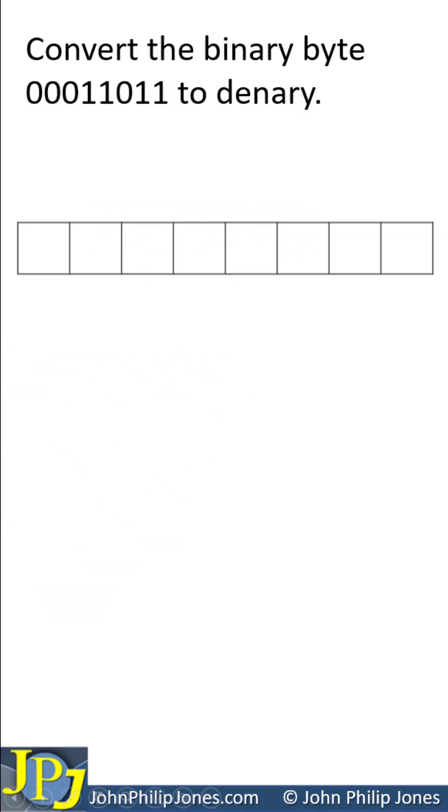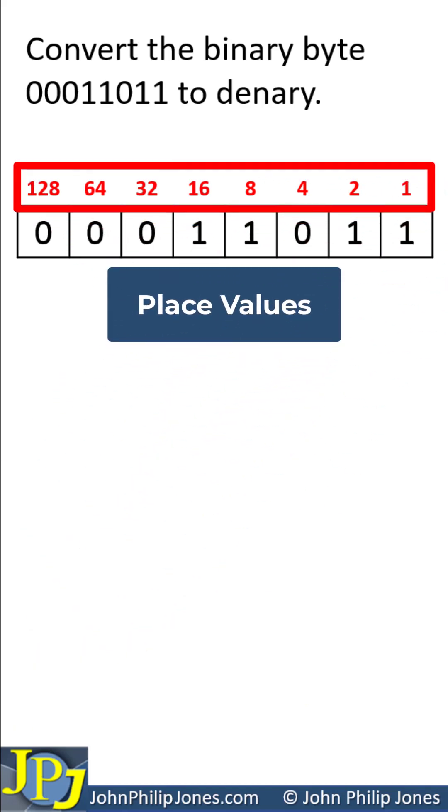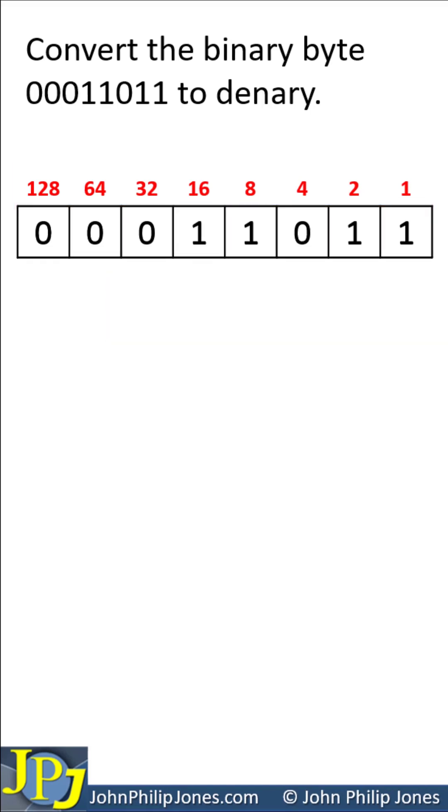For the purpose of the video, I'm creating a grid and I'm going to move the binary byte into the grid, and then I will place down the place values for each position of the bits that appear in the number. As outlined in the last video show,